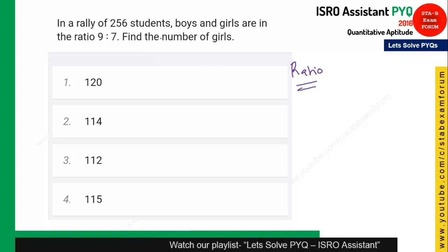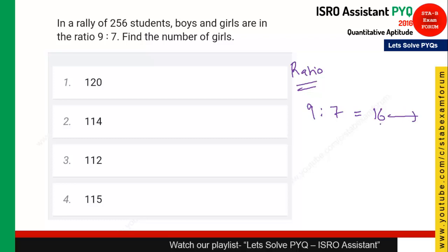The next question is from Ratio. In a rally, the ratio of boys to girls is 9:7, making the total ratio parts 16. The total number is 256, which is 16 × 16 times. So the number of girls = 16 × 7 = 112. Option 3 is the right answer.